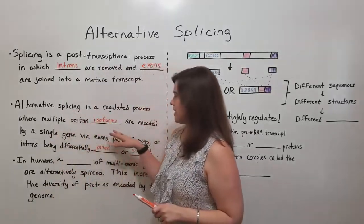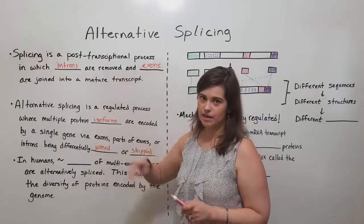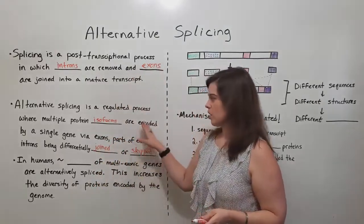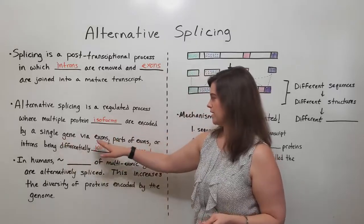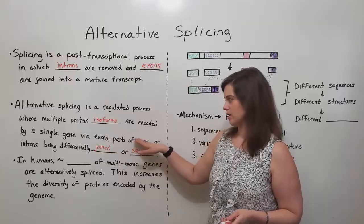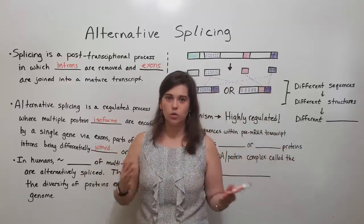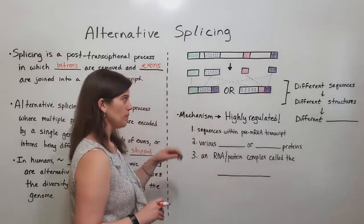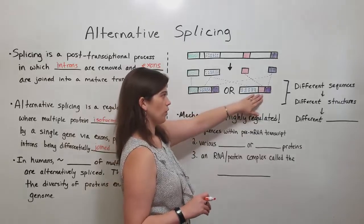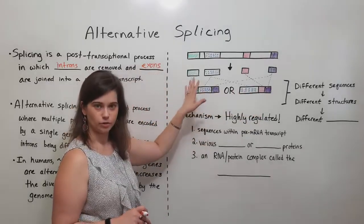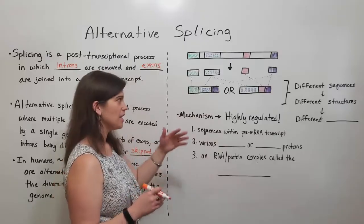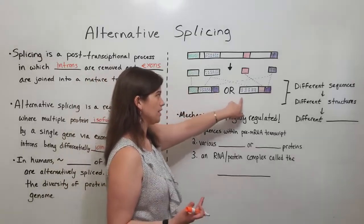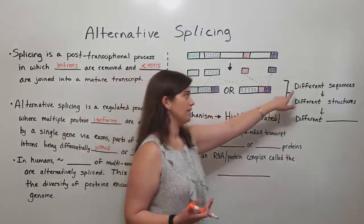In alternative splicing, you have situations where multiple protein isoforms — like the two shown here, and often even more than two — can be encoded by a single gene. This occurs because exons, or even different parts of exons or introns, can be joined or skipped in different ways, resulting in many different combinations. Remember that these isoforms are still mRNA transcripts — they have not been translated into protein yet, but they do code for different proteins because they have different sequences.